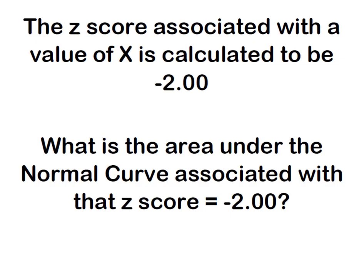So what if we have a z-score associated with a value of x and it's calculated to be a negative 2.00? What area under the curve is associated with that negative z-score of 2.00? Again, you already know it's two standard deviations below the mean because it's a negative z-score, but what area are we talking about?